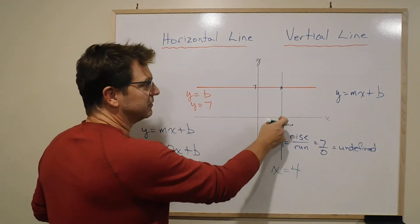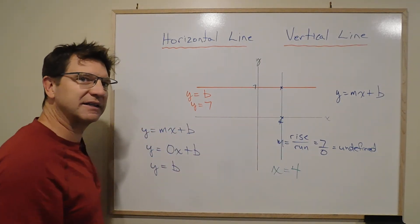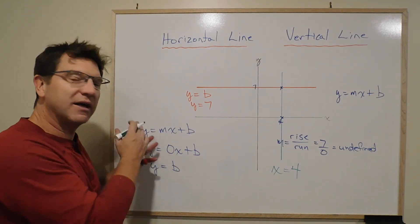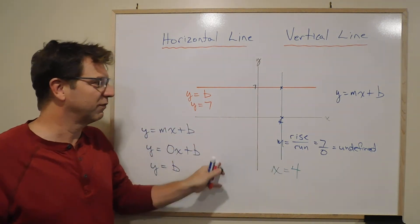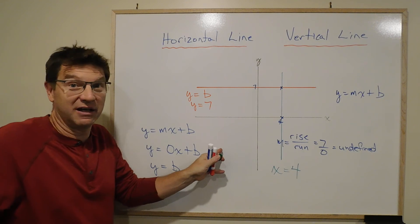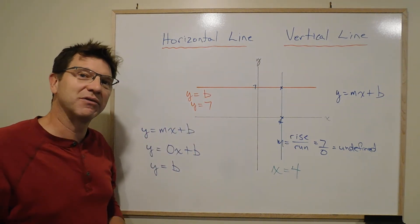It goes through the 4 on the x-axis. There's no way to calculate it—it's just by definition. x equals 4, or if it was over here, x equals negative 8, or whatever it happens to be.